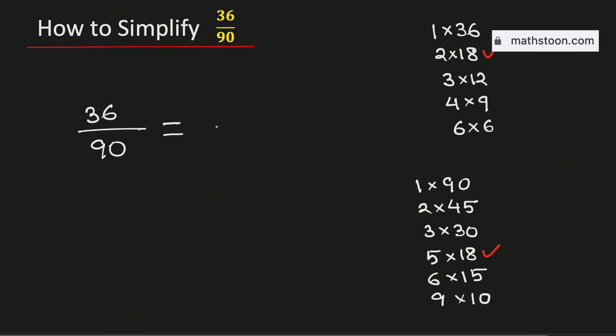Now, to simplify this fraction, we will divide both the numbers 36 and 90 by their greatest common factor which is 18. And if we do it, we will get 2 over 5.